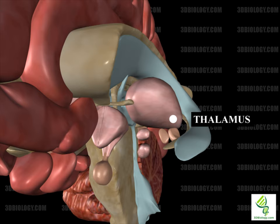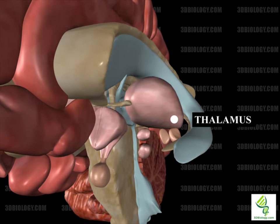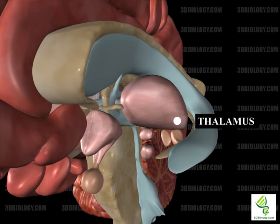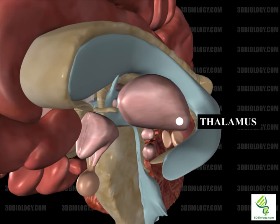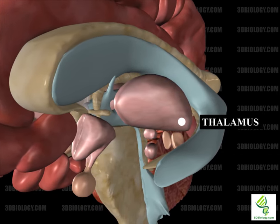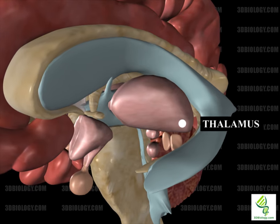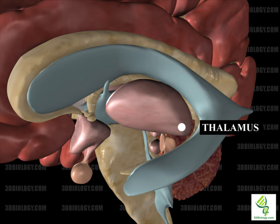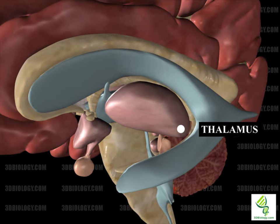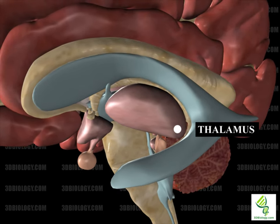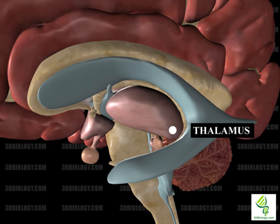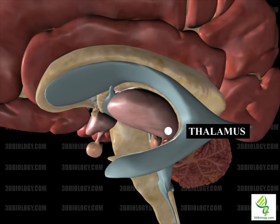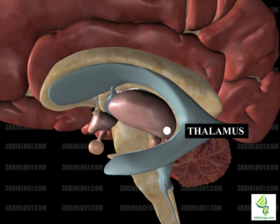The thalamus is a gray matter structure in the forebrain, found medially. The thalamus is a hub for information relay. It relays sensory signals, regulates alertness, arousal, sleep, and consciousness. Every sensory system utilizes the thalamus except for the olfactory system. It is connected to the cortex by many thalamocortical radiations.